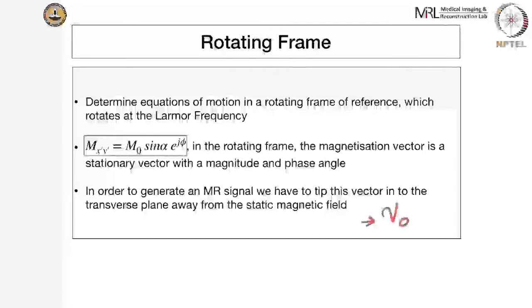That is the idea of the rotating frame of reference — it simplifies the analysis quite a bit. That is why people use a rotating frame of reference when working with MR signals. In order to generate a good MR signal, we have to tip the magnetization vector M into the plane — the signal is proportional to sin(alpha), and alpha = pi/2 gives maximum signal. How do you tip this magnetization? This is where the nuclear magnetic resonance aspect comes in.